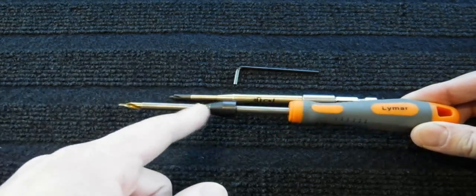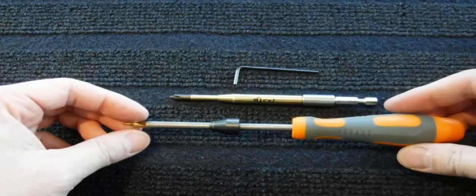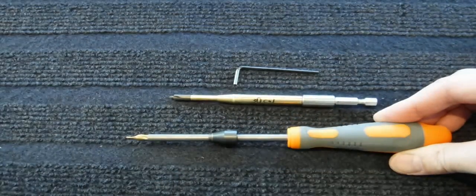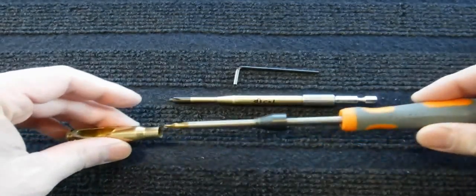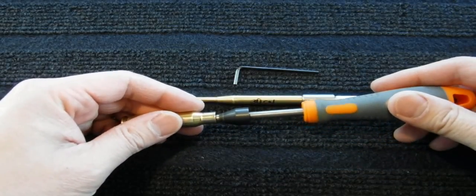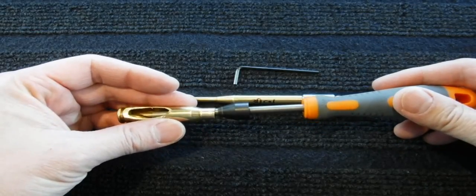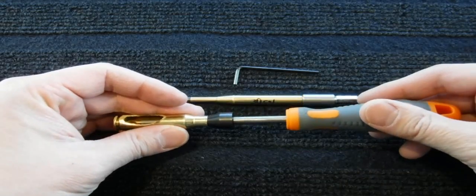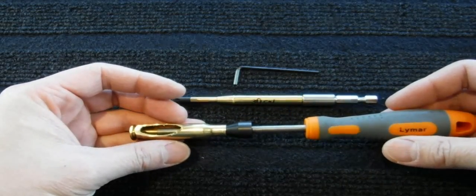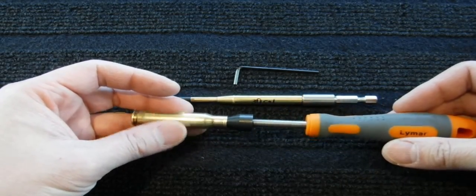One of the things with the Lyman flash hole deburring tool is you have to set this stop here and it indexes off of the case mouth, like shown here. So when it indexes off of the case mouth, it is rather inconsistent at times.